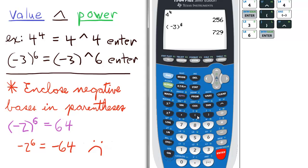I'm going to show you an example. Negative 2 raised to the 6th. First, incorrectly, I'll just put negative 2 raised to the 6th. This is wrong.